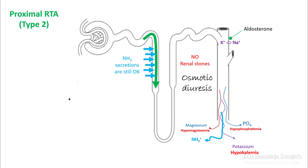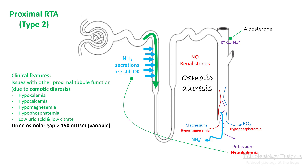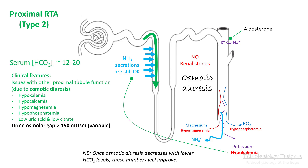One good thing in proximal RTA is that ammonia secretion is okay. Hypokalemia also stimulates more ammonia secretion in the PCT, so excretion of non-volatile acid is maintained, giving a urine osmolar gap greater than 150. The clinical features are all related to osmotic diuresis: hypokalemia, hypocalcemia, hypomagnesemia, hypophosphatemia, and low uric acid and low citrate levels. Serum bicarb will be 12 to 20. Once the osmotic diuresis decreases and bicarb reaches a lower number — around 12 to 14 — these values remain stable.